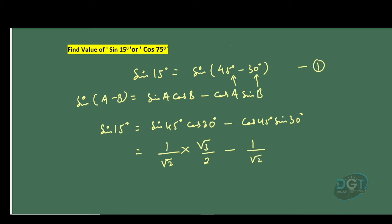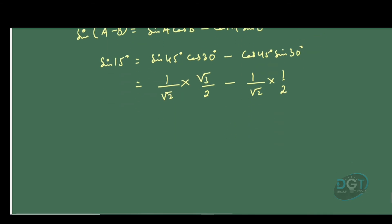minus 1/(2√2). Since the LCM of these two fractions is the same, we can simply subtract the numerators. So it would be (√3 - 1)/(2√2).